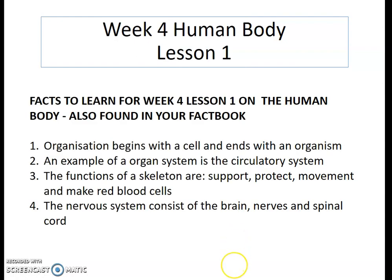Just as a reminder, the four facts you will need to learn from this lesson are: organisation begins with a cell and ends with an organism; an example of an organ system is the circulatory system; the functions of a skeleton are listed on your screen or in your factbook; and the nervous system consists of the brain, nerves and spinal cord. You should have those in your factbook, and we're going to start with four quick questions based on the previous facts.